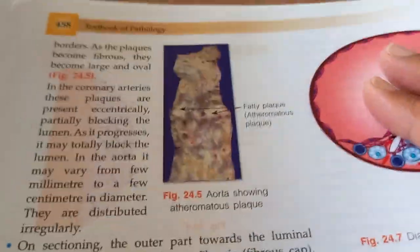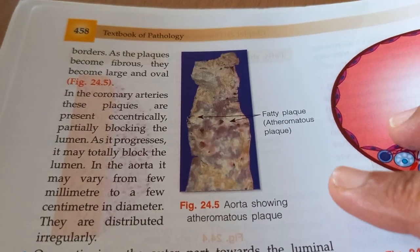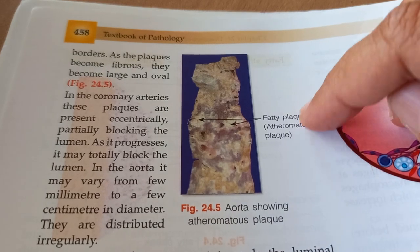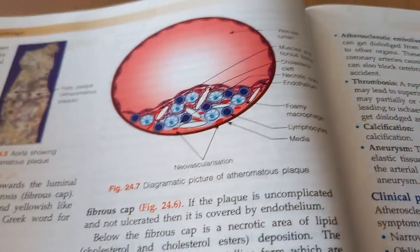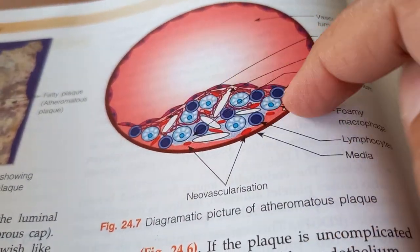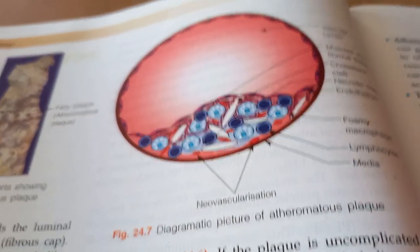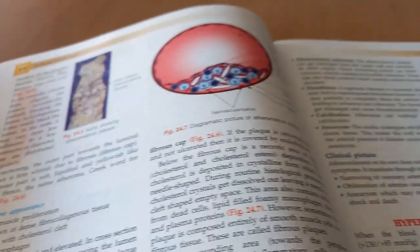Aorta showing the atheromatous plaque. Fatty plaques are there. Atheromatous plaque neovascularization. You can see here. This is a plaque in the blood vessel. This is what will lead to your ischemia, and then it will lead to coronary heart disease, finally leading to MI.